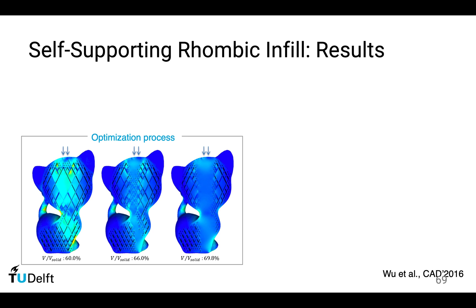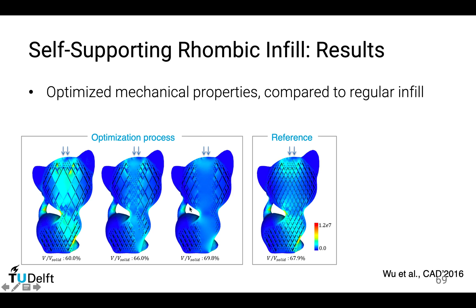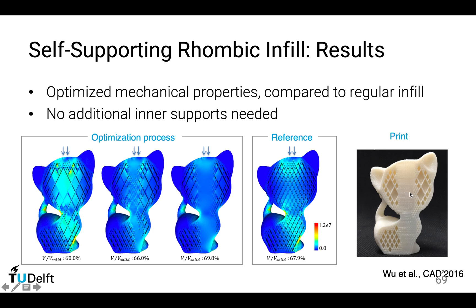These three images show the stress distribution of intermediate structures during optimization. In optimization, this region is more important for this particular load condition, so it is adaptively refined. As it refines, it becomes solid, while other regions are less important, so they remain very large to save material. If we compare this structure with a uniform infill, we can observe that in the uniform infill there is stress concentration at a certain point, but with topology optimization this region of stress is relatively small. The benefit of using this rhombic structure is that it is self-supporting, so it can be fabricated without support structures.